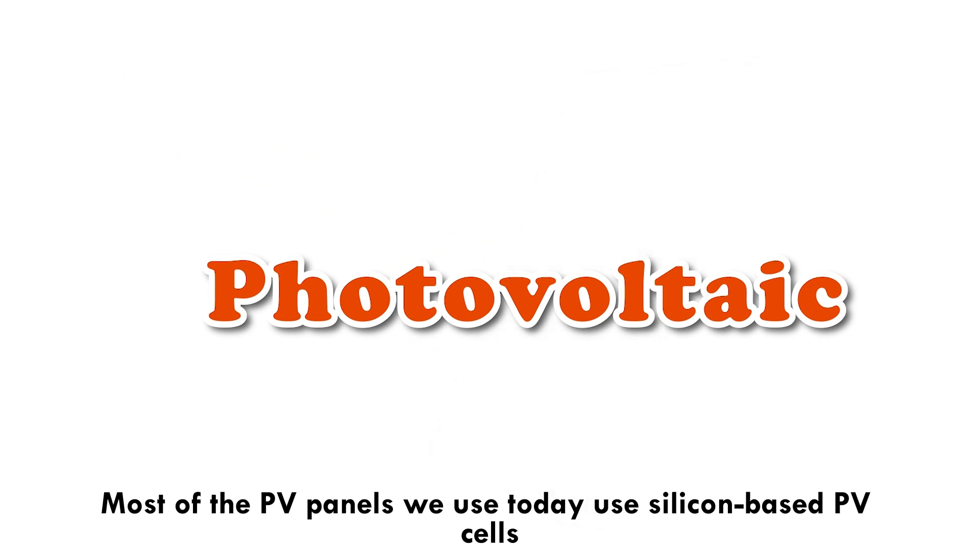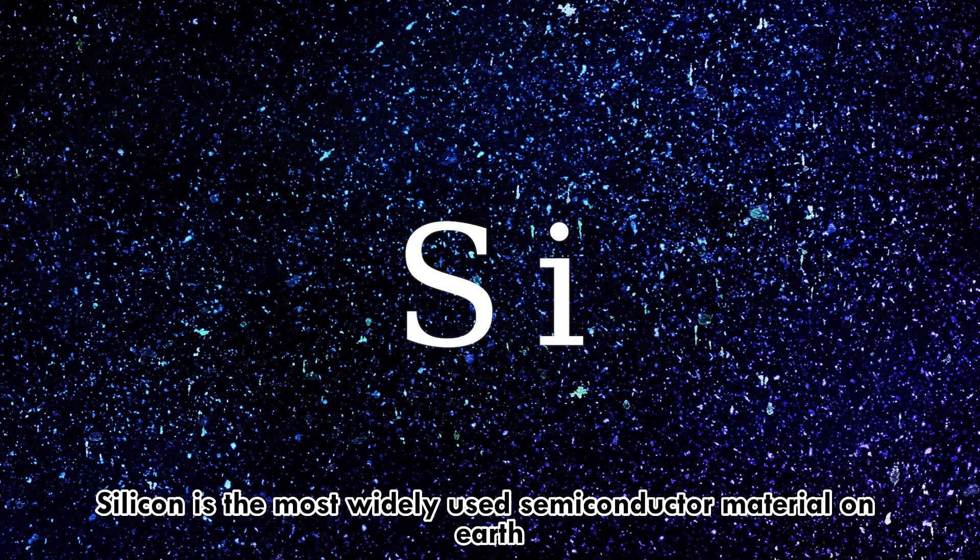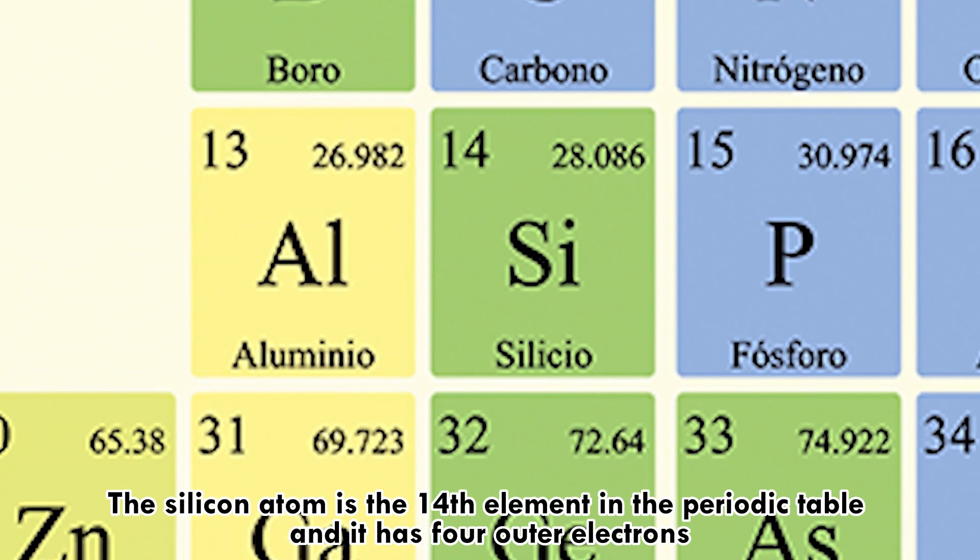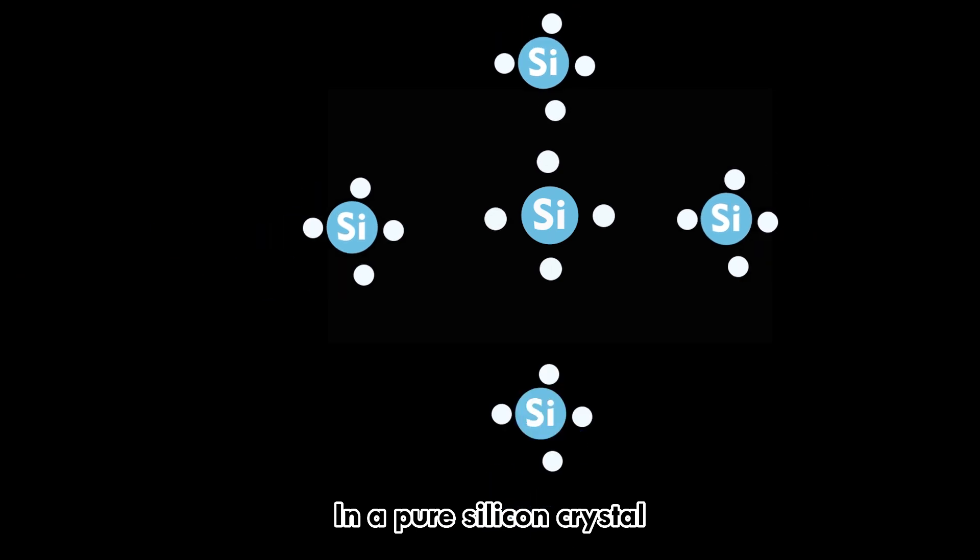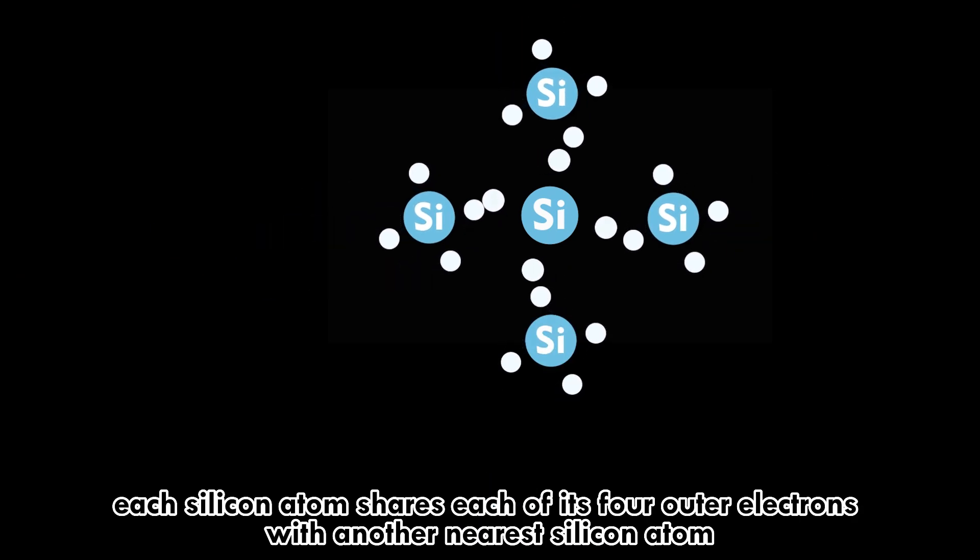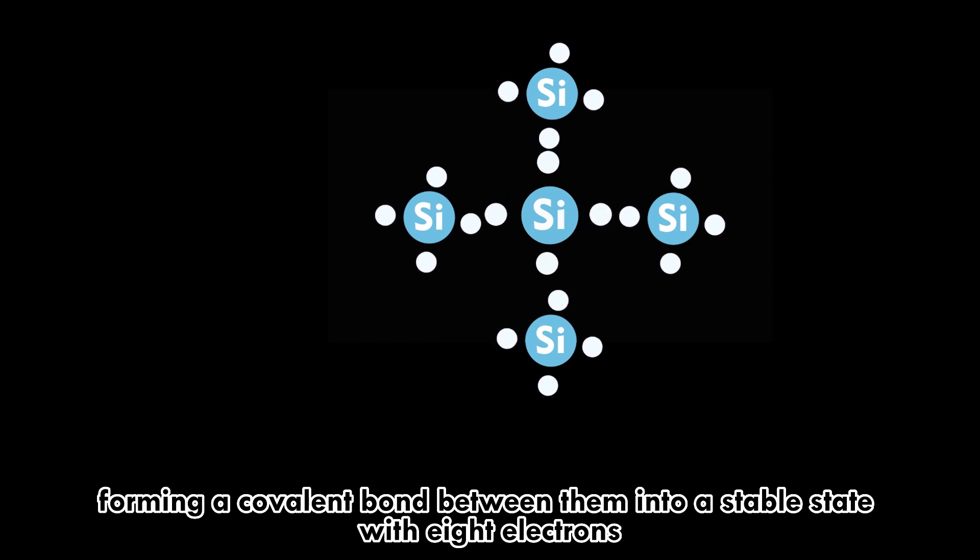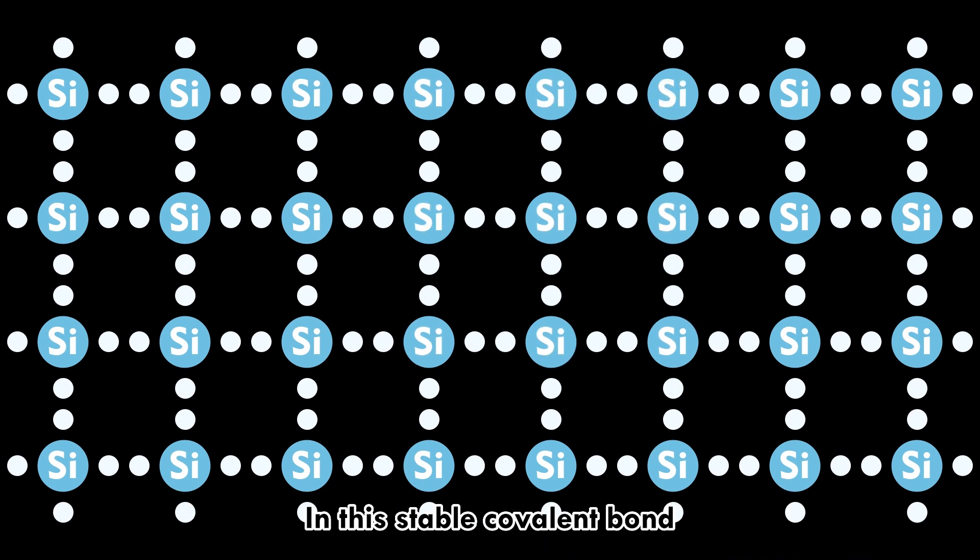Most PV panels today use silicon-based PV cells. Silicon is the most widely used semiconductor material on Earth. The silicon atom is the 14th element in the periodic table and has four outer electrons. In a pure silicon crystal, each silicon atom shares each of its four outer electrons with another nearest silicon atom, forming a covalent bond into a stable state with eight electrons. In this stable covalent bond, the electrons are not free to move.